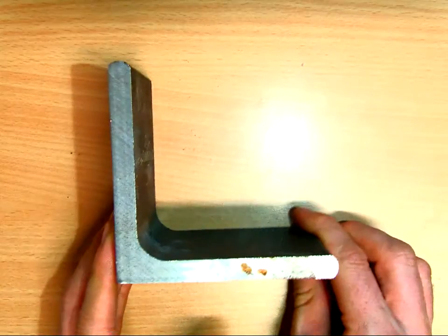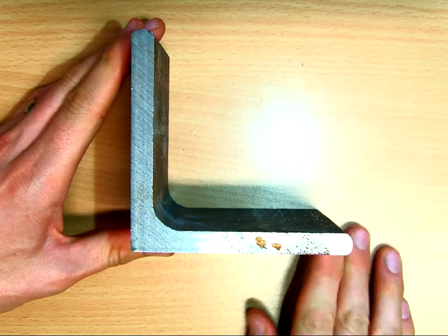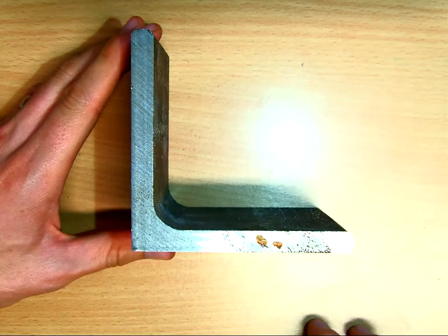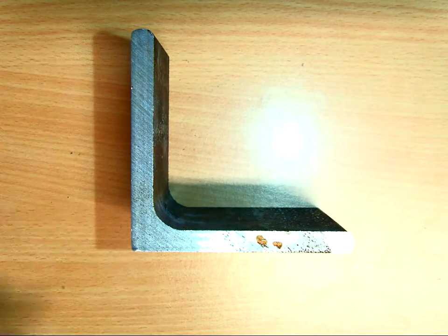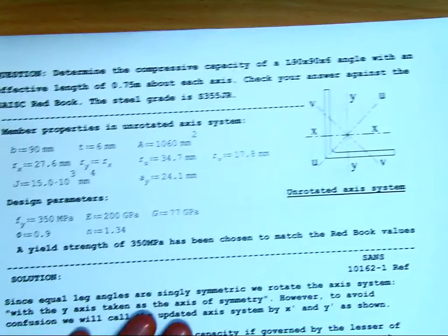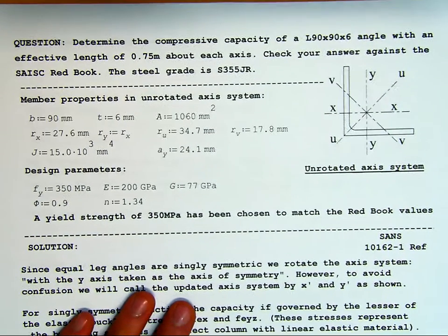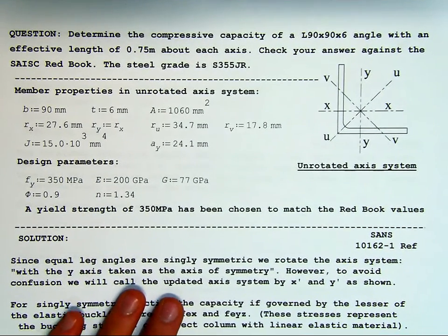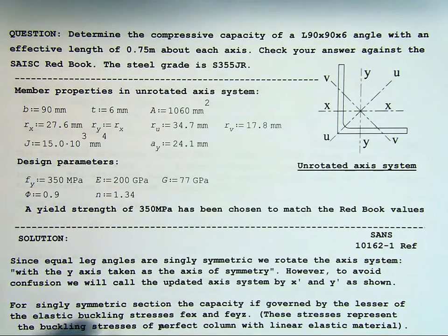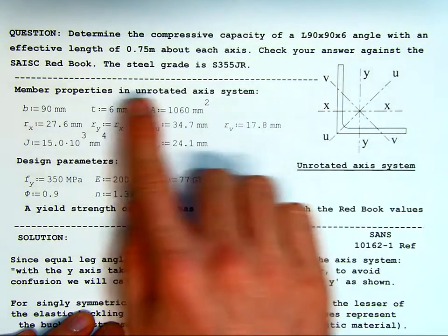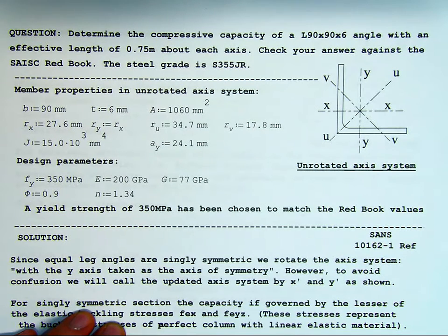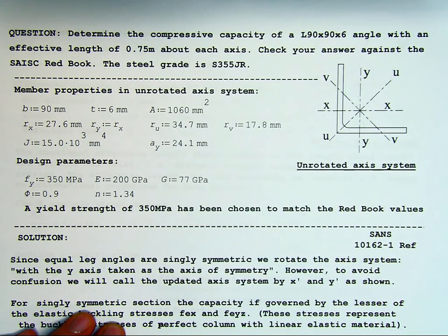Here is the sort of angle we're going to be looking at. It's an equal leg angle. It's a 90 by 90 by 6 section, so 90 wide and 6 mm thick, and we're going to check the capacity of the section. So make sure you have a copy of the set of notes that are in front of you. The question is, determine the compressive capacity of a L90x90x6 angle with an effective length of 0.75 meters about each axis. Check your answer against the South African Institute of Steel Construction Redbook.